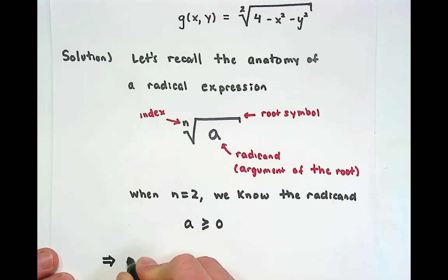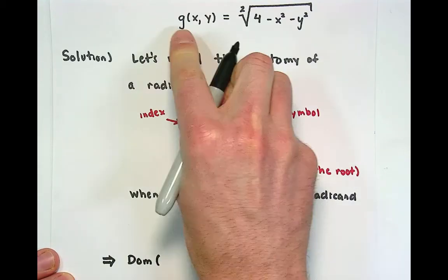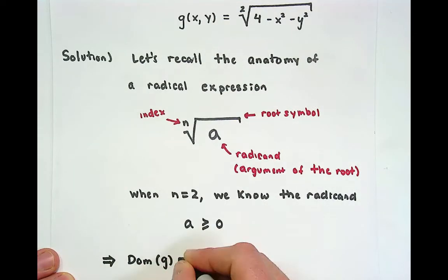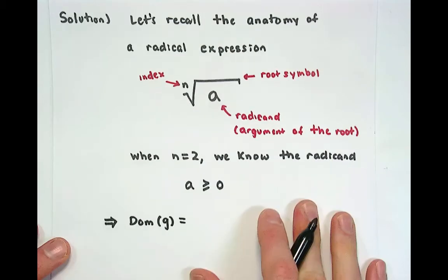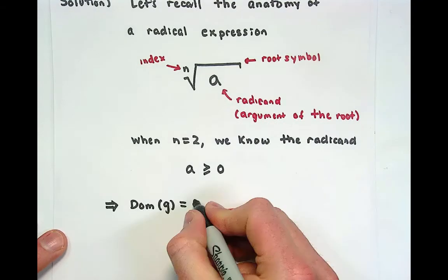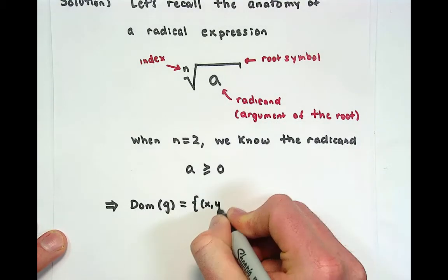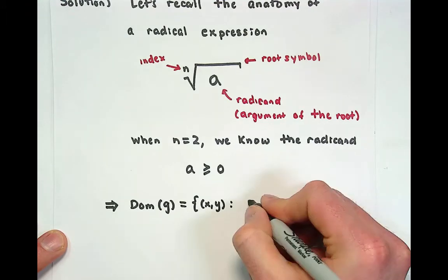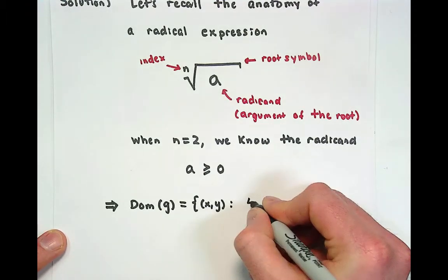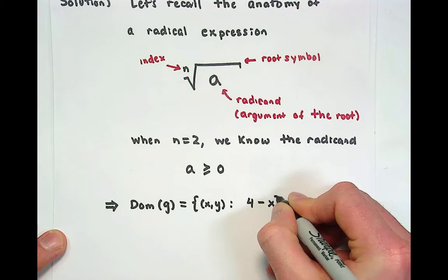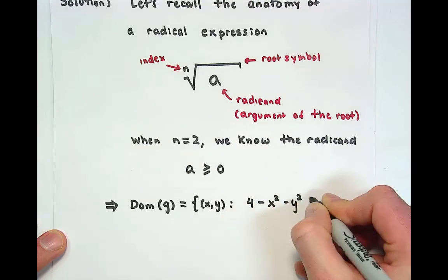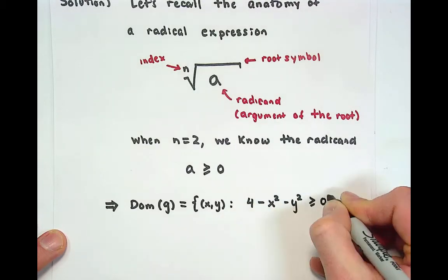The moment that we know this, we want to say that the domain of our function g is going to be equal to the set of valid inputs. What would it mean to be a valid input? It would mean that I have x comma y such that the radicand, 4 minus x squared minus y squared, is bounded below by zero.